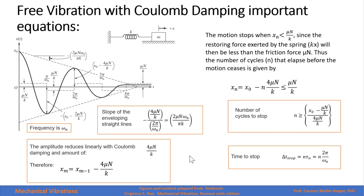That does not happen when we have viscous damping or hysteretic damping. But in the case of Coulomb damping, the force of the spring is not able to restore the friction force. The amplitude reduces linearly with Coulomb damping, whereas in viscous damping, it reduces exponentially.